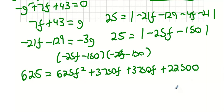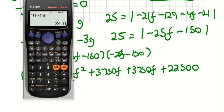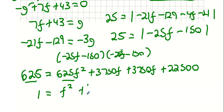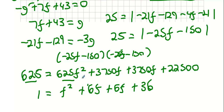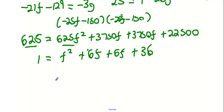Both sides appear divisible by 625, so dividing everything by 625: 625 over 625 is 1, 625f² over 625 is f², 3750 over 625 is 6, and 22,500 over 625 is 36. That gives us f squared plus 12f plus 36 minus 1 equals zero, so f squared plus 12f plus 35 equals zero.